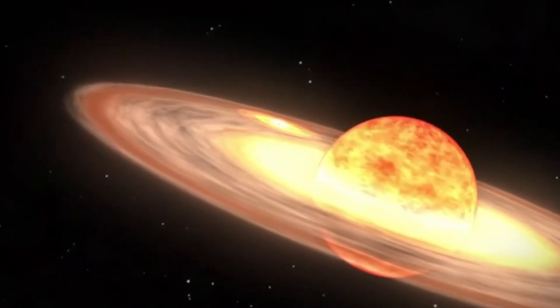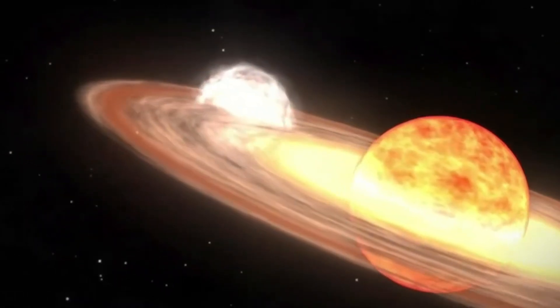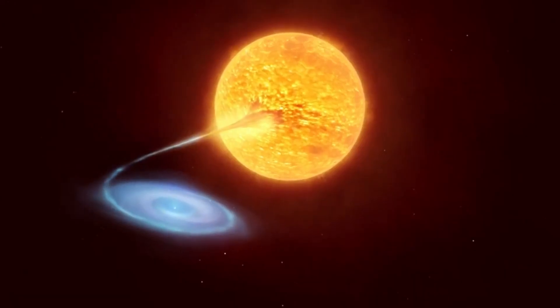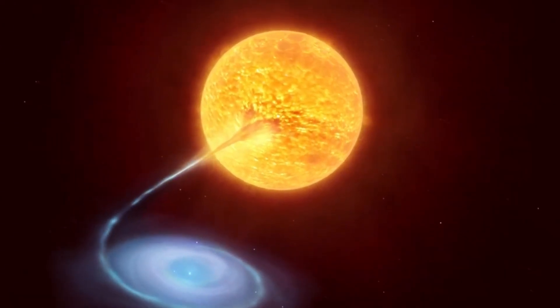A white dwarf is a dense remnant left behind when a star like our sun runs out of fuel and collapses. Meanwhile, the red giant in this system is an aging star. This means it's losing its outer layer to the gravitational pull of the white dwarf.